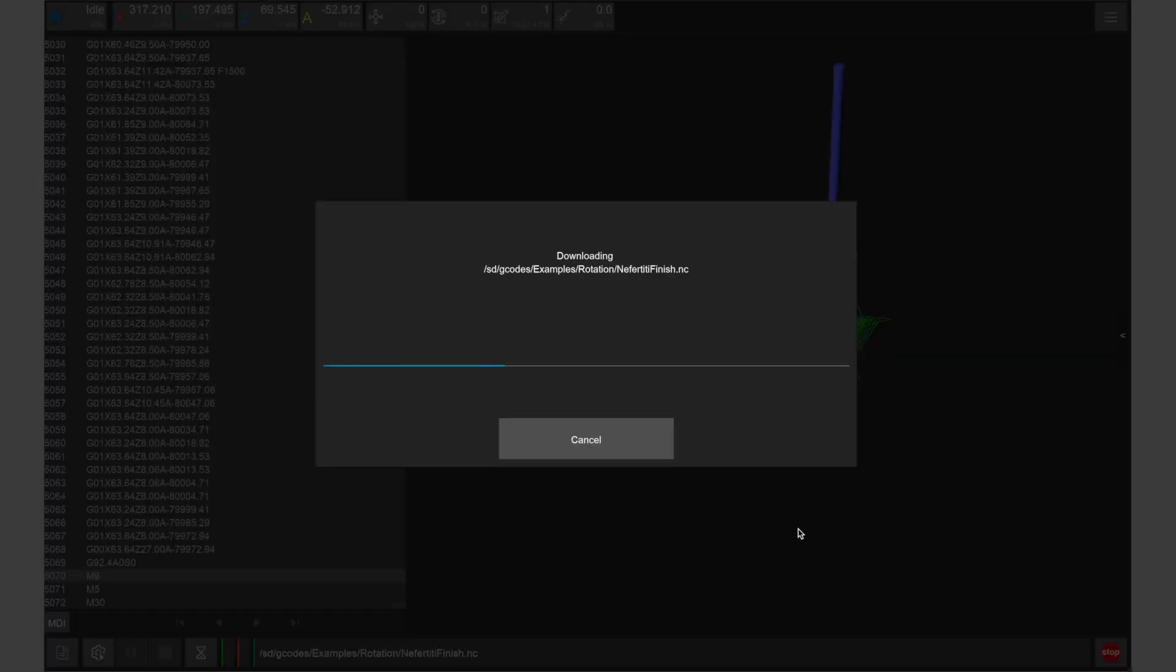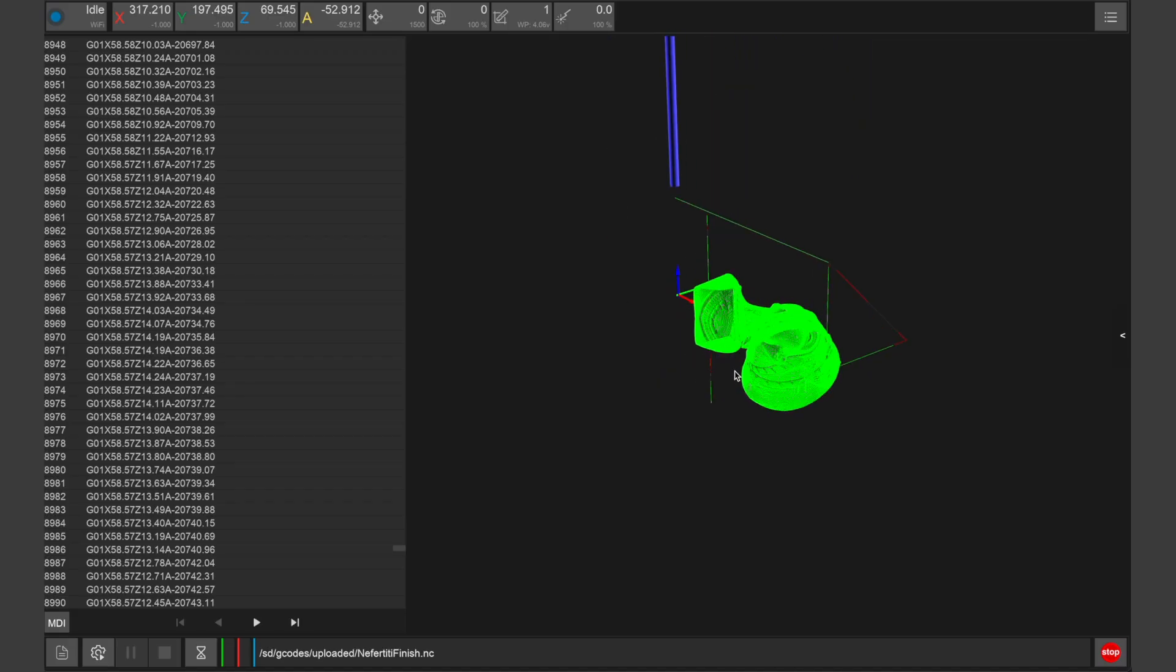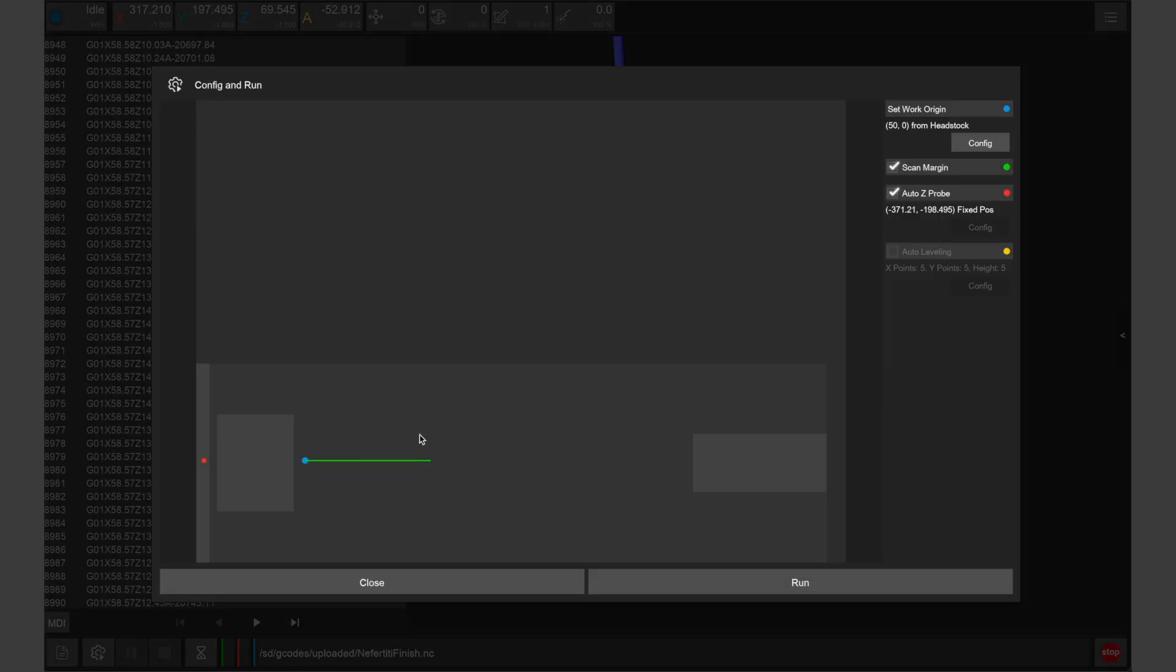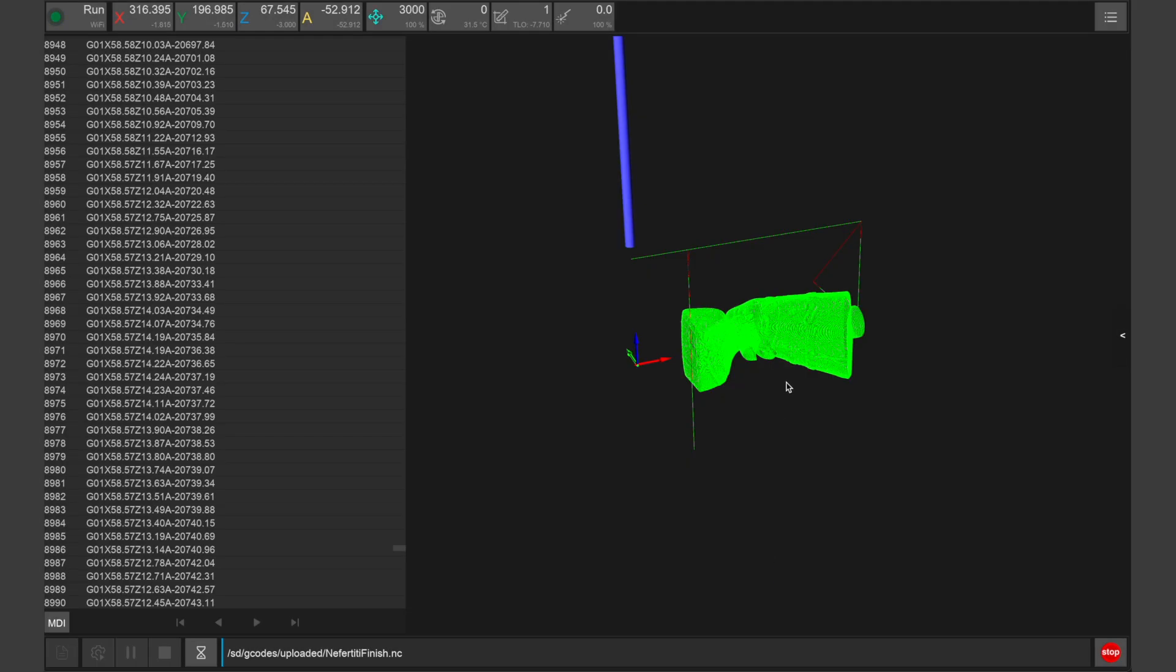We then want to load the second file for finishing this example project. Note that the preview matches the current position of the part within the Carvera's rotary module. Press config and run and uncheck scan margin and auto z-probe as we do not need to run these again, as we've already set these parameters in the first job.